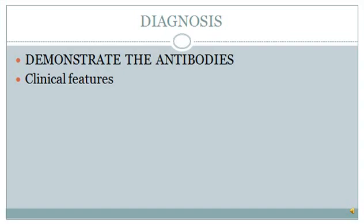How to make the diagnosis of APS syndrome? It's quite simple. We need to just demonstrate the antibodies, and with some key clinical features present additionally, it makes the diagnosis more easy. Remember that the most important antibody which we must demonstrate is the antibody against phospholipid beta-2 glycoprotein 1 complex. We should also search for clinical features which suggest a hypercoagulable state, like recurrent miscarriage or DVT.